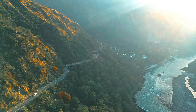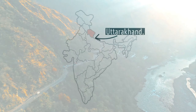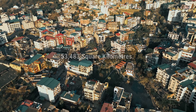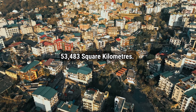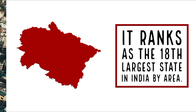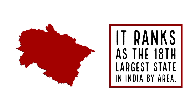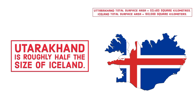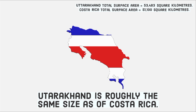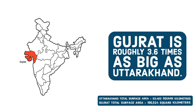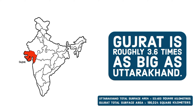Uttarakhand, one of the 28 states of India, is situated in the northeastern part of the country. Covering roughly 53,483 square kilometers in total surface area, it ranks as the 18th largest state in India by area. Uttarakhand is roughly half the size of Iceland, or nearly the same size as Costa Rica, while Gujarat is roughly 3.6 times as big as Uttarakhand in terms of total surface area.